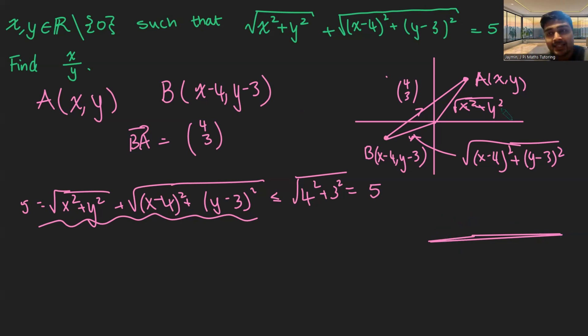What does that tell us? Well, that tells us that the gradient vector from the origin to xy is the same as from B to the origin. So in other words, we can say that y over x is equal to y minus three over x minus four. And now we've got an equation involving x and y.